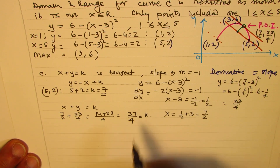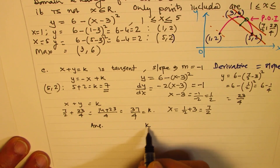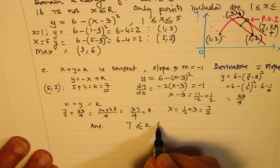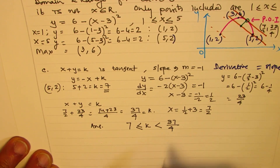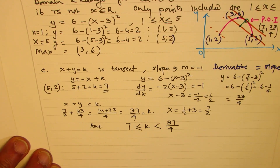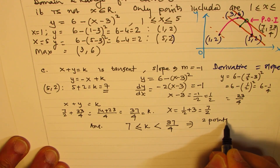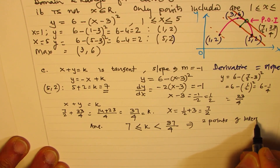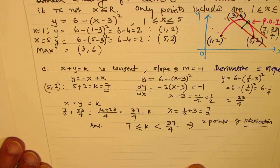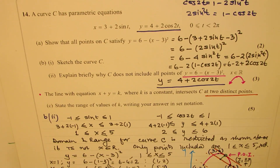So we find our answer: k should be greater than or equal to 7, but less than 37/4, since at 37/4 you get only one point of intersection, giving two points of intersection for values strictly less than 37/4. That is how we solve this question — an extremely difficult question involving many techniques.